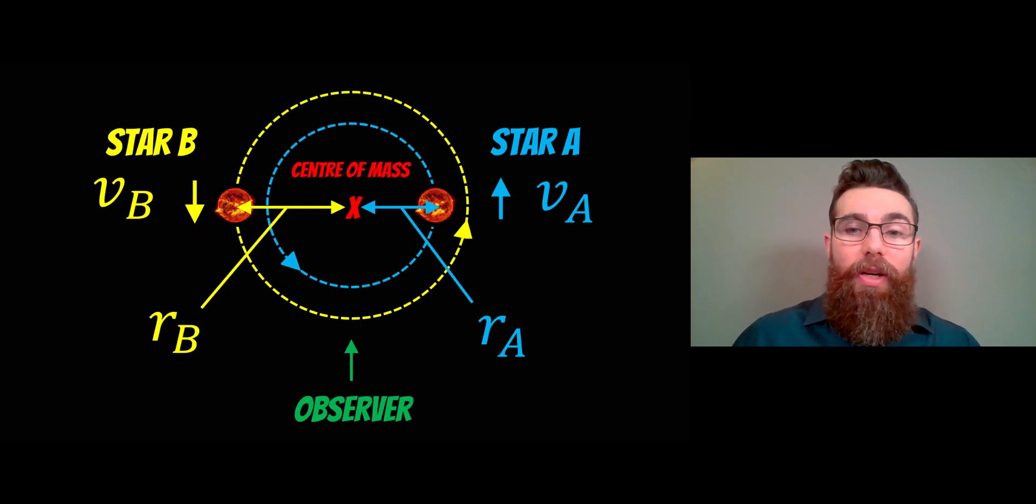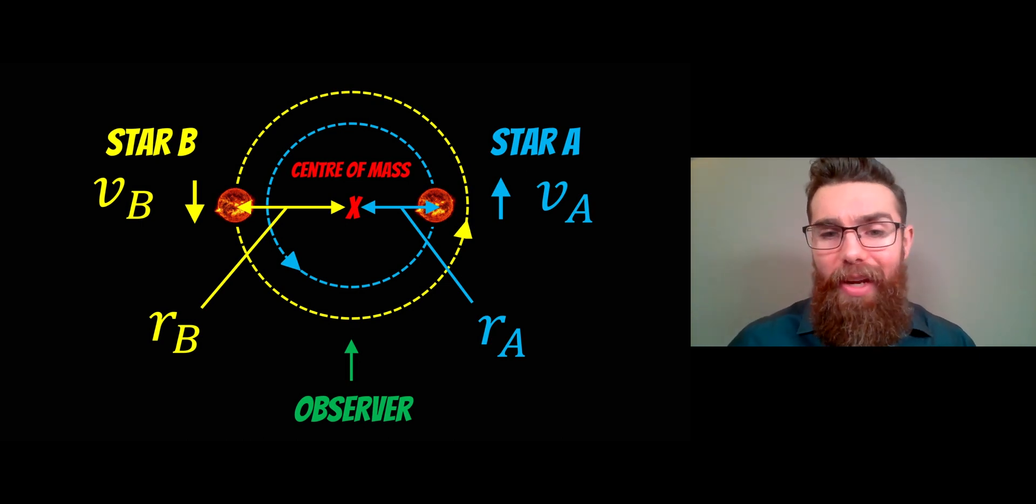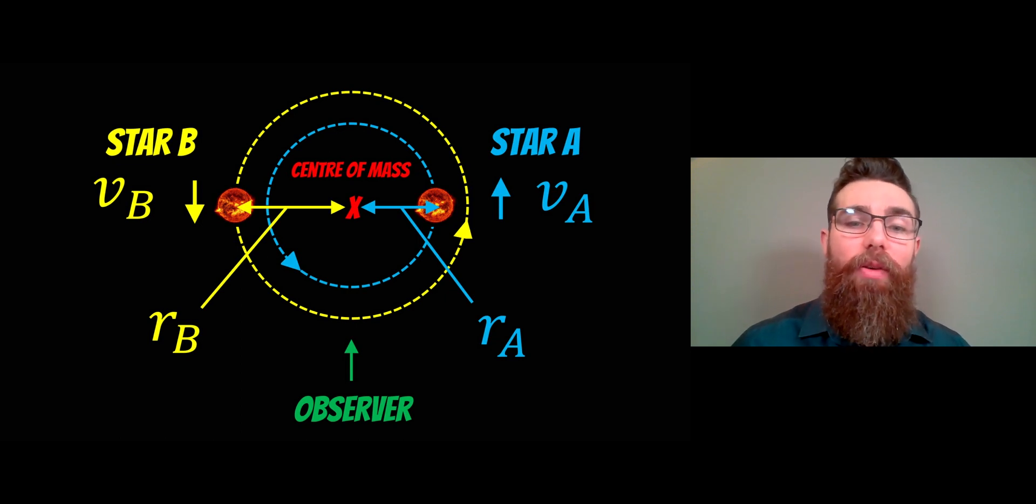Going back to the orbital configuration, we can now measure v_A and v_B, which is the orbital velocities of both stars. We can then start to look at r_A and r_B. This is the orbital radius of each star about the common center of mass. That's what we need next.